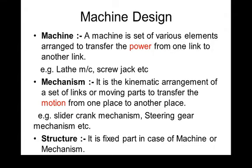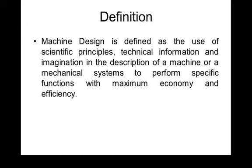In alternate language: a mechanism becomes a machine when it transmits power; when it transmits only motion, it remains a mechanism. The third category is structure — it is a fixed part in a machine or mechanism that does not transmit any kind of power.